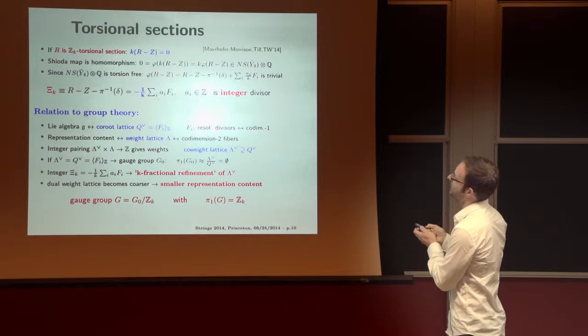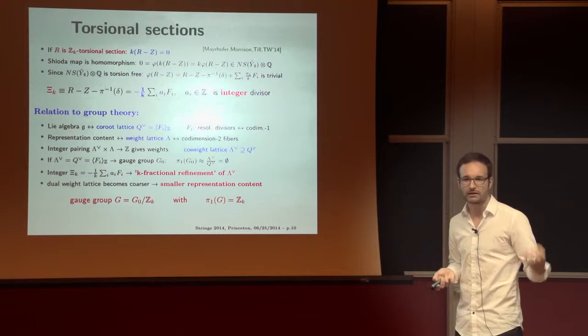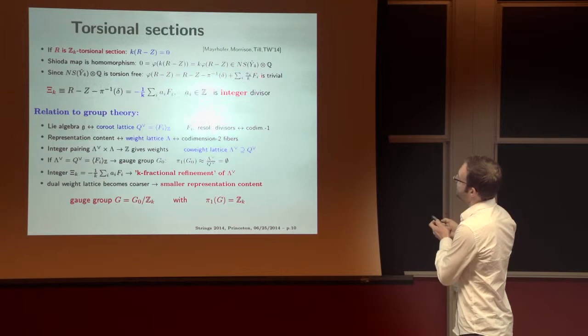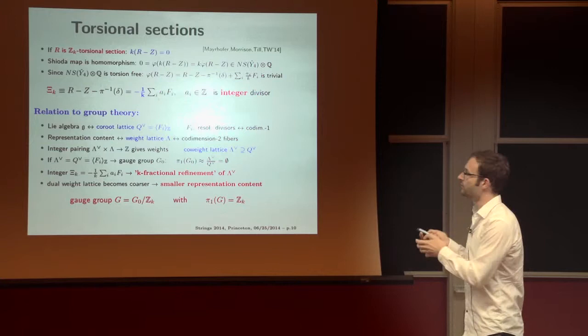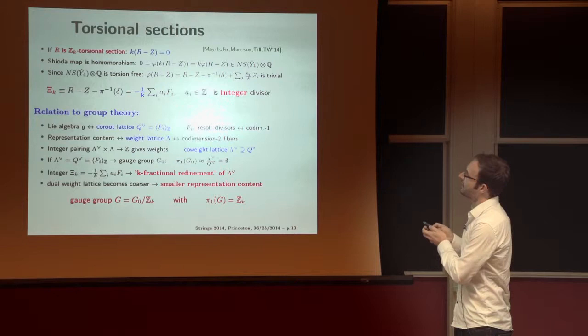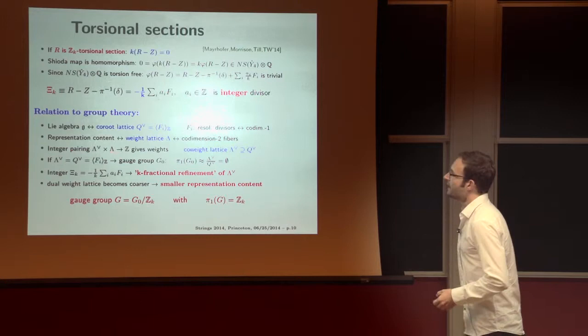So therefore, the Shioda map itself must map this linear (r minus z) to zero. So we have, therefore, a vanishing linear combination. So what, for the non-torsional section, gave rise to a U(1) is now actually trivial as a divisor. Since this is zero, we therefore have a divisor, (r minus z), essentially, which we can equate with this extra factor here, a linear combination of the resolution divisors, which we get from our non-abelian groups. And since the left-hand side is integer, so is the right-hand side. So the upshot is, in situations with Z_k torsion, we get k-fractional linear combinations of resolution divisors, which are integer. And this has important relations, important consequences for group theory.